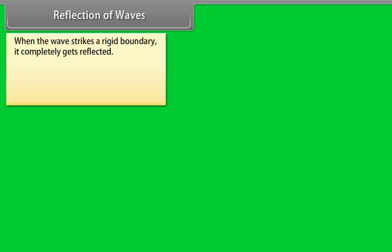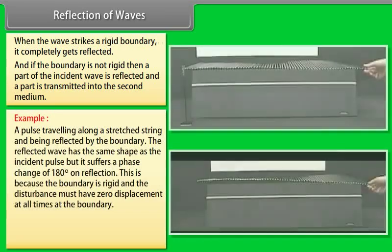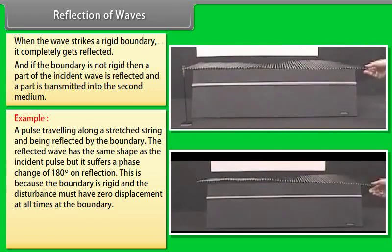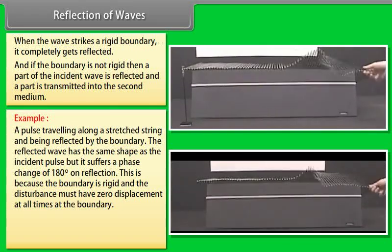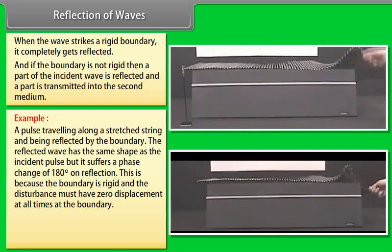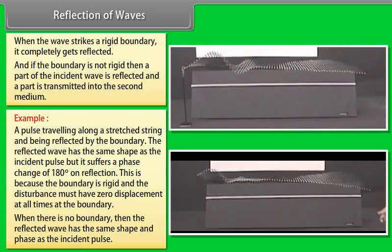Reflection of waves: When a wave strikes a rigid boundary, it completely gets reflected. If the boundary is not rigid, a part of the incident wave is reflected and a part is transmitted into the second medium. For a pulse travelling along a stretched string reflected by a rigid boundary, the reflected wave has the same shape as the incident pulse but suffers a phase change of 180 degrees on reflection, because the disturbance must have zero displacement at all times at the boundary. When there is no rigid boundary, the reflected wave has the same shape and phase as the incident pulse.